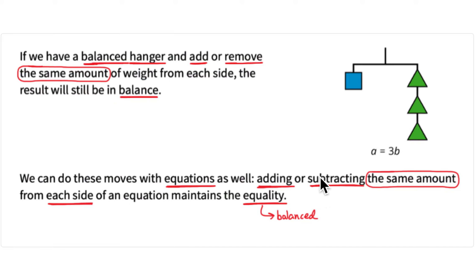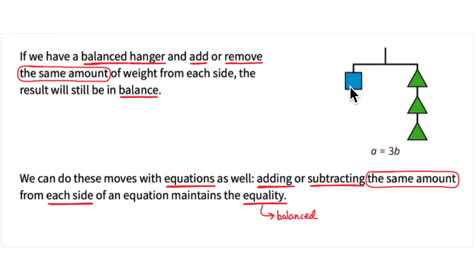Now, if one A equals three B, what's the value of B? Can you see that you can divide this blue square into three equal parts? One of those parts is going to be one third of that blue square, or one third of A. So B is equal to one third of A.